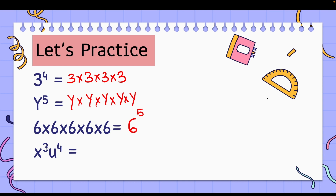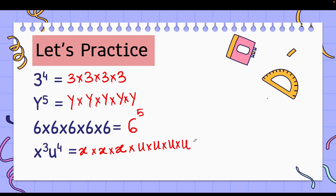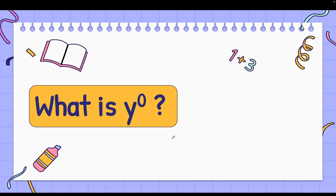Now x to the power 3 and u to the power 4: you have x multiplied with x multiplied with x — 3 times — and u multiplied with u multiplied with u multiplied with u — 4 times. So now you know the basics of exponents.